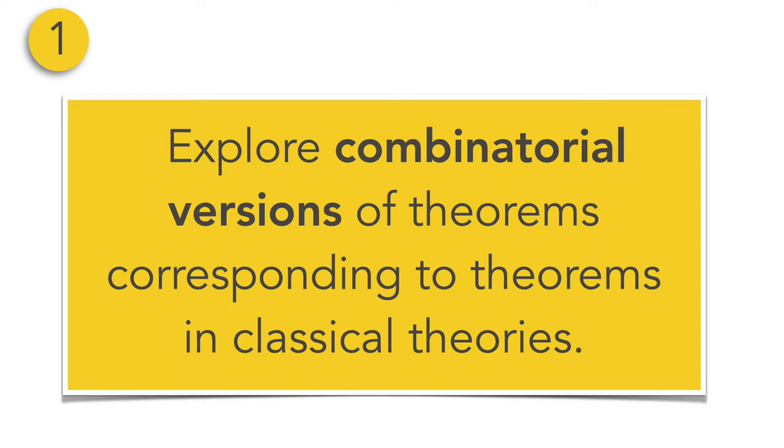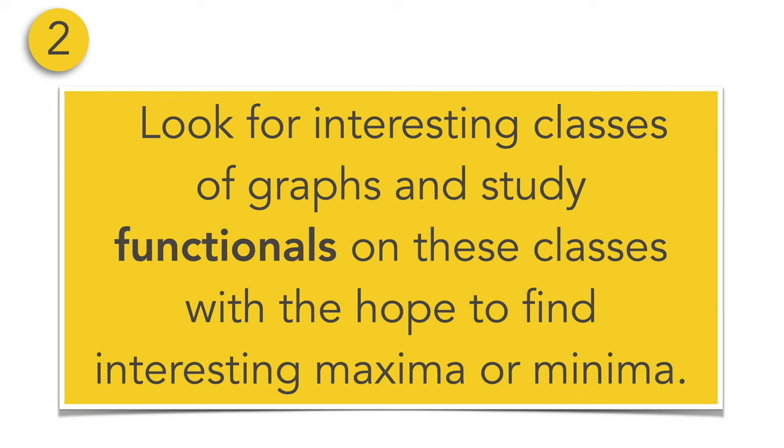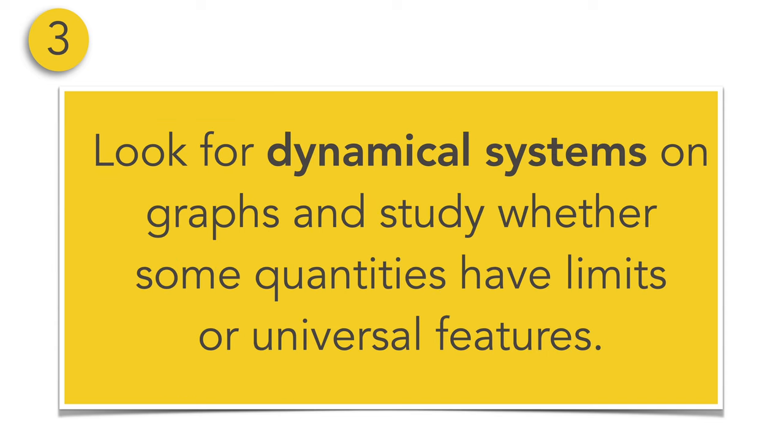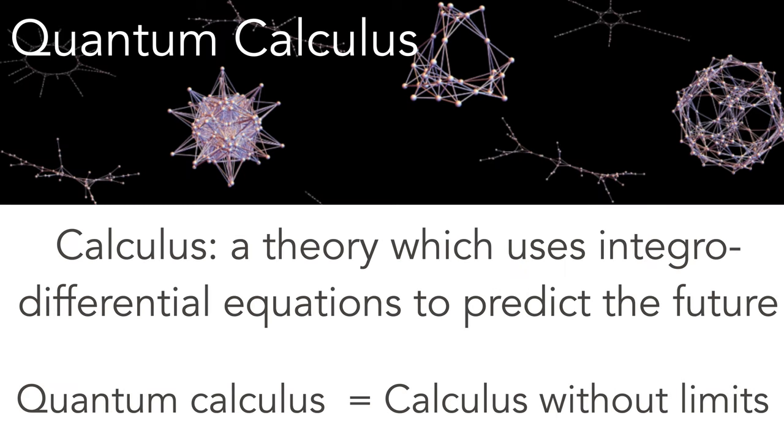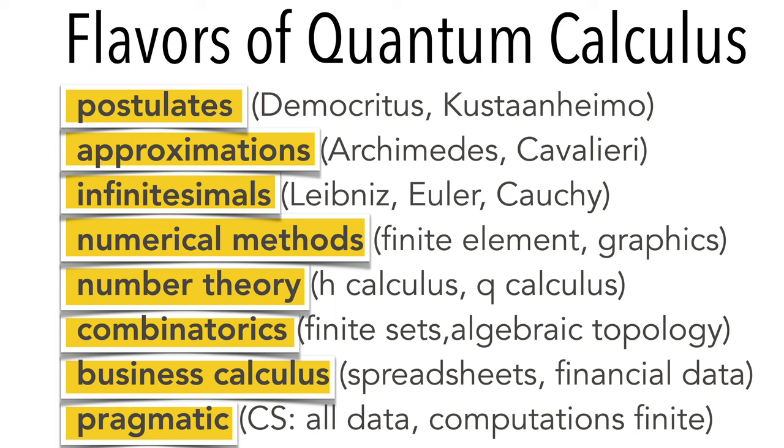Sets, generalized maybe by sheaves, which are also topoi. Boolean algebra is replaced with Heyting algebra, more general logic, or non-standard analysis which extends the axiom systems. It's a consistent extension of the usual axiom system, classical mathematics, in the context of calculus. My own approach is more modest: to explore combinatorial versions of theorems corresponding to theorems in classical theories. Look for interesting classes of graphs and study functionals in these classes with the hope to find interesting maxima and minima.